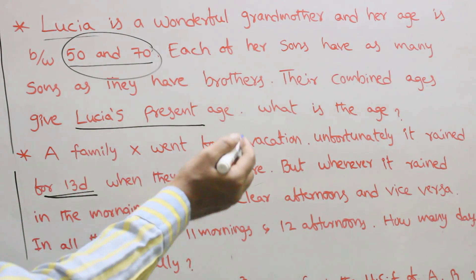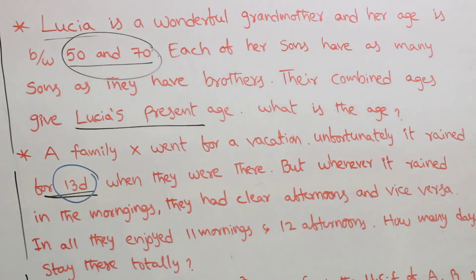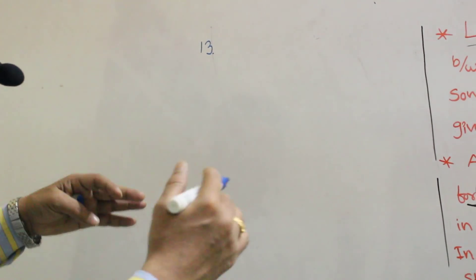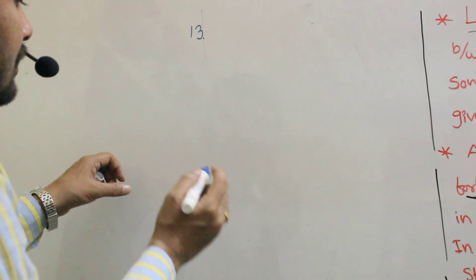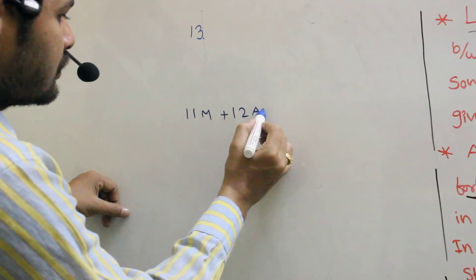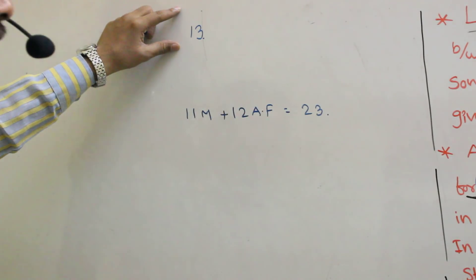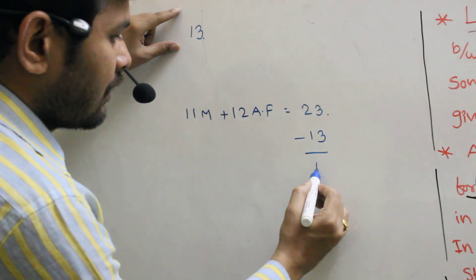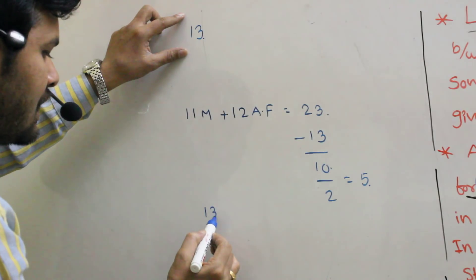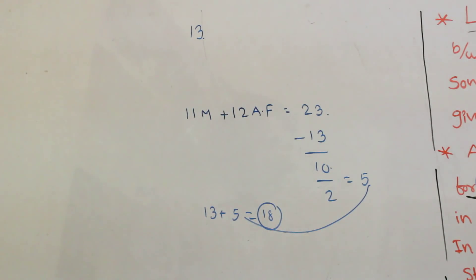It rained for 13 days. They enjoyed 11 mornings and 12 afternoons, giving a total of 23 half-days. Subtract the 13 rainy days: 23 minus 13 equals 10 afternoons, which equals 5 days. The first 13 days plus the next 5 days equals 18 days total stayed.